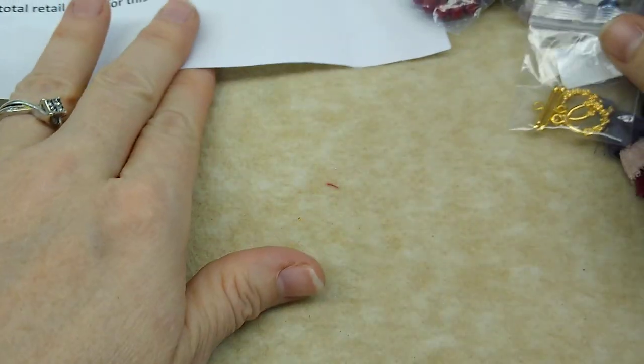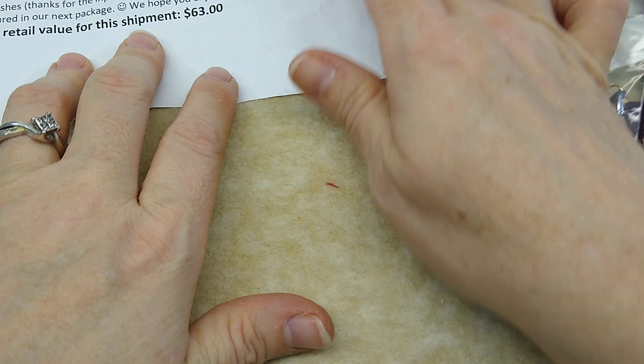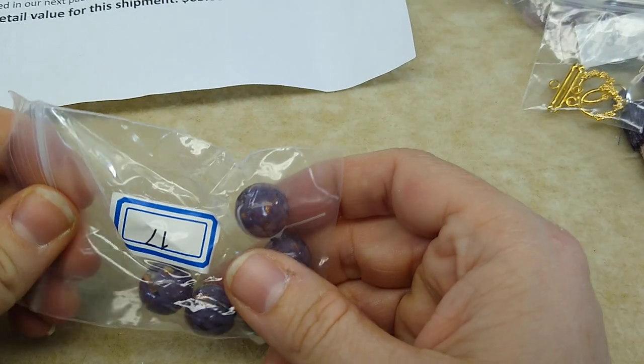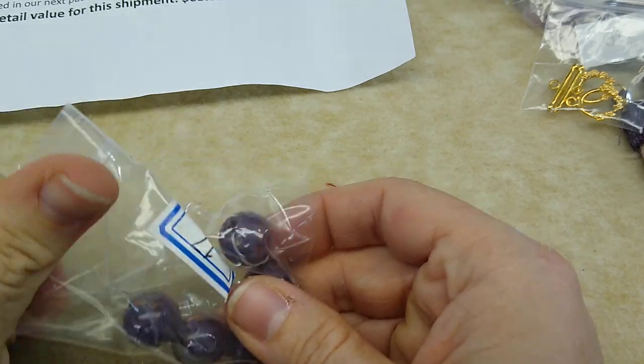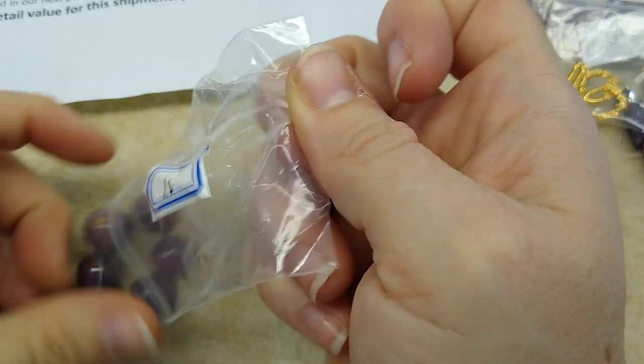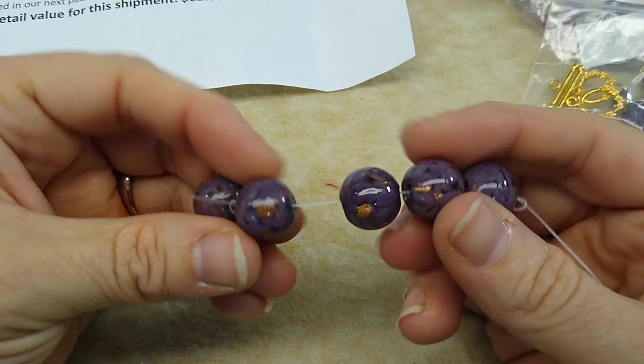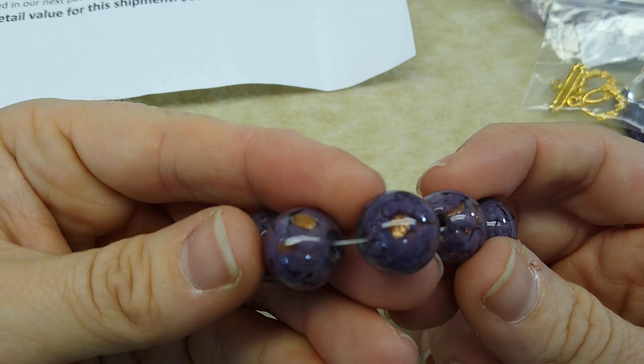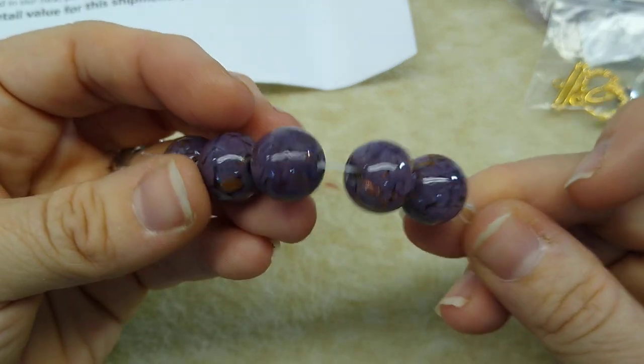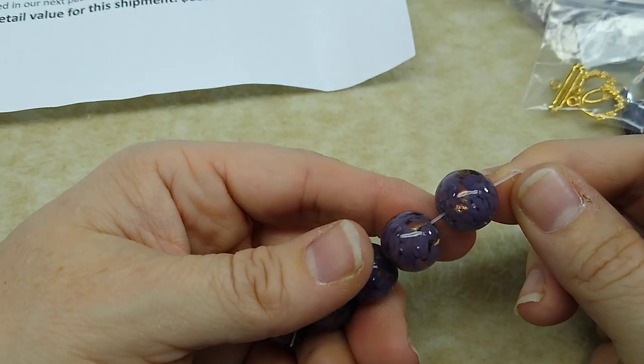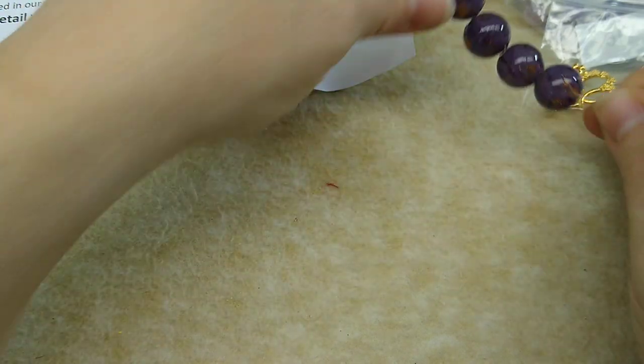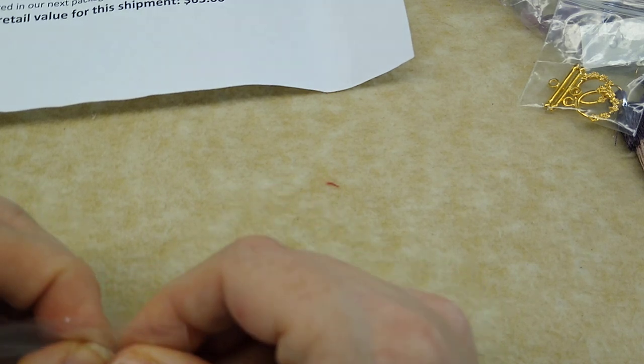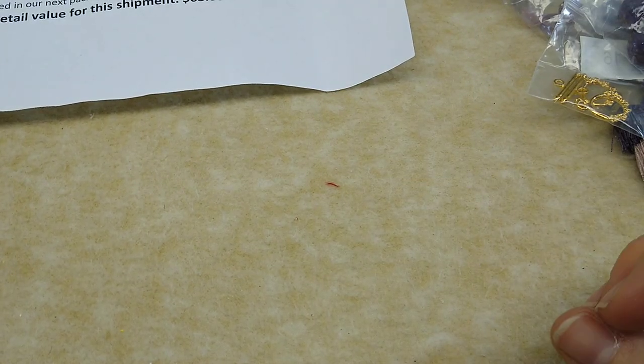Then number 17 is five pieces of 12 millimeter lampwork, art, glass, handmade round beads, violet petals with gold toned swirl. Oh, that's a mouthful. Oh, these are beautiful. Look how pretty. It has got this gold. I think you can see that on the camera. Wow. Those are pretty. I'm telling you this month is just stunning. I am. I'm, I didn't think you could impress me much more than last month, but you've, they've done it.